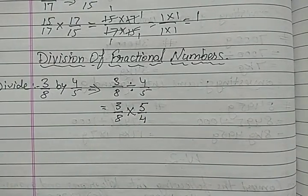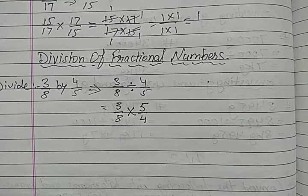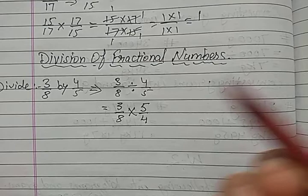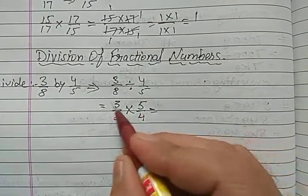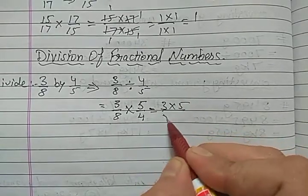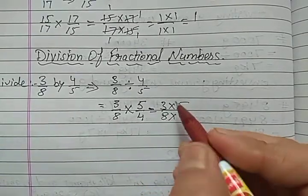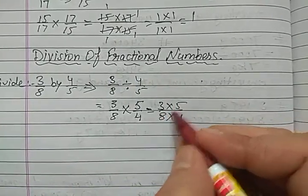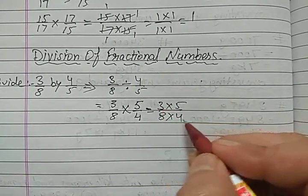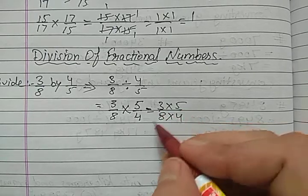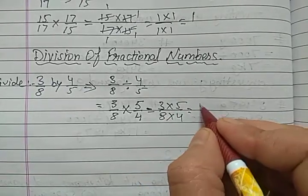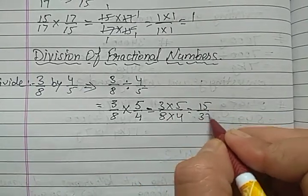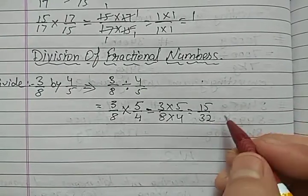When we write the reciprocal of the divisor, the division sign gets converted into multiplication sign. This is a very important step in the division of fractions. Now it becomes easy — just multiply numerator with numerator and denominator with denominator. 3 and 5 are prime numbers and 8 and 4 do not share common factors with 3 or 5, so multiply them: 15 upon 32. This is the answer.